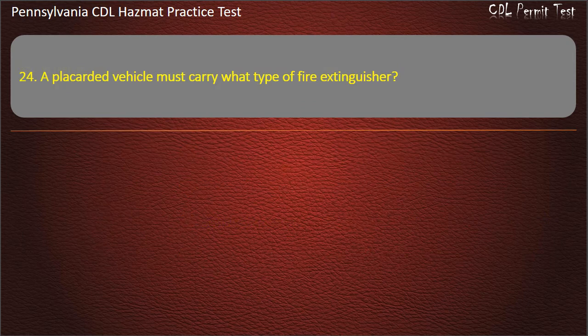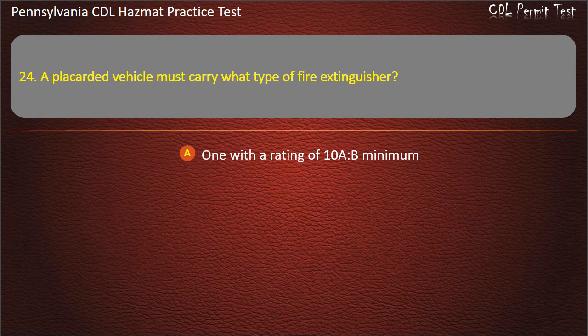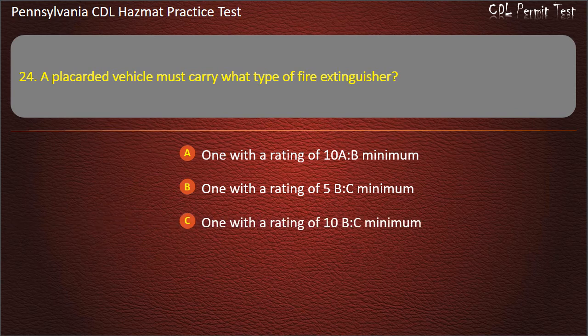Question 24. A placarded vehicle must carry what type of fire extinguisher? Options: One with a rating of 10 AB minimum; One with a rating of 5 BC minimum; One with a rating of 10 BC minimum. Answer: One with a rating of 10 BC minimum.